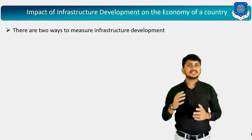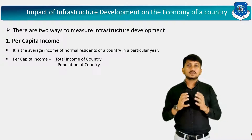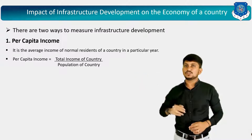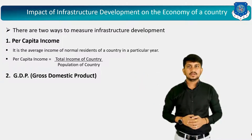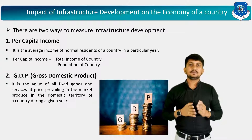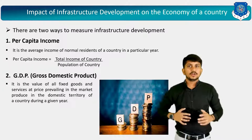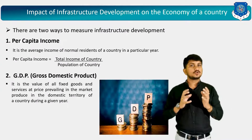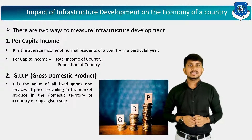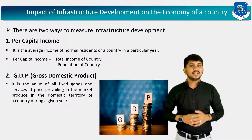There are two ways to measure infrastructure development. First is per capita income — the average income of normal residents of a country in a particular year. Per capita income equals total income of the country divided by the population of the country. Second is GDP, which stands for Gross Domestic Product — the value of all final goods and services at prices prevailing in the market, produced in the domestic territory of a country during a given year. Due to acceleration of infrastructure projects, overall development and development of common people can be achieved. Thus, infrastructure development is the key to economic development.